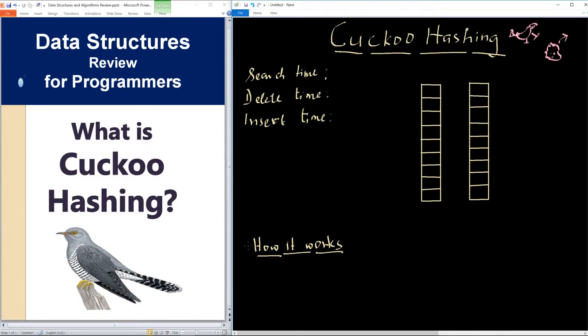Let's now see how it works. Cuckoo hashing maintains two hash tables, T1 and T2, and two hash functions, H1 and H2.